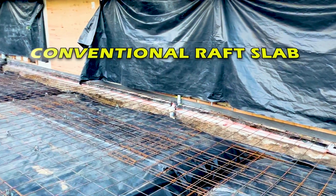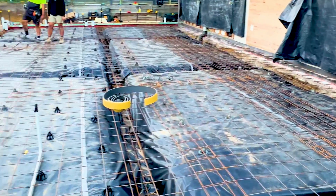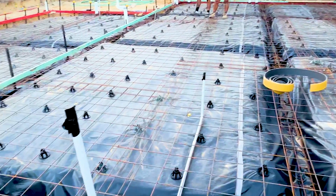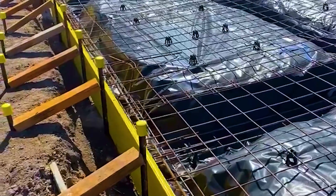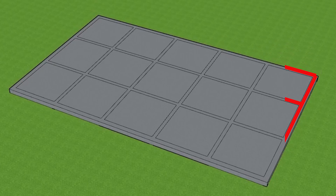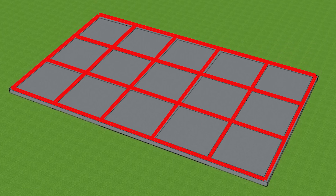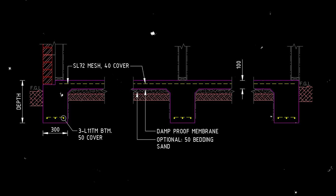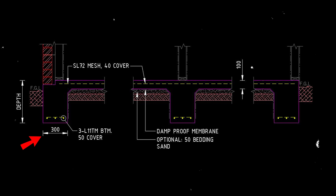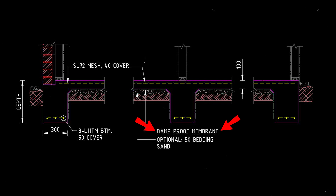The stiffened raft or conventional raft slab is widely used in Australia. This system consists of a grid of concrete beams with steel reinforcement that supports a concrete slab. Ground beams are placed around the perimeter of the house and internally at regular spacings. The slab is typically 100 mm thick reinforced with steel mesh, and the ground beams 300 mm wide reinforced with trench mesh. That black plastic you have seen is a damp proof membrane or a vapor barrier depending on the location, and some builders like to place a 50 mm layer of bedding sand.